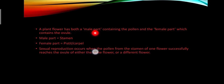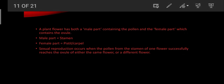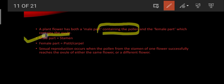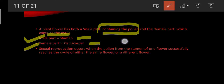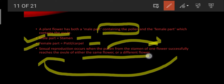A plant flower has both a male part, the stamen, which contains the pollen, and a female part, the pistil or carpel, which contains the ovule. Sexual reproduction occurs when pollen from the stamen of one flower successfully reaches the ovule of either the same flower or a different flower.